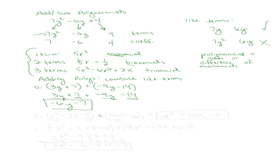Adding polynomials is just like combining like terms, which we learned in chapter 3. Now let's try another example. Say I want to add x squared minus 4x minus 3, plus 5x squared minus 6x. These are both trinomials. To add them, we drop the parentheses and combine like terms.